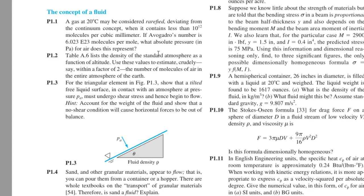So let's start by problem number one. A gas at 20 Celsius may be considered rarefied, deviating from the continuum concept when it contains less than 10 to the power of 12 molecules per cubic millimeter. If Avogadro's number is 6.023 times 10 to the power of 23 molecules per mole, what absolute pressure in Pascals for air does this represent?